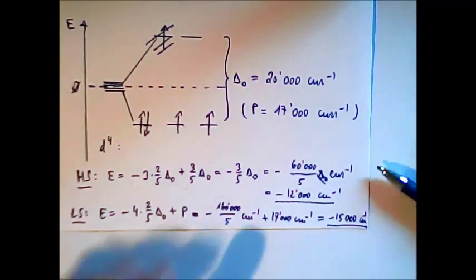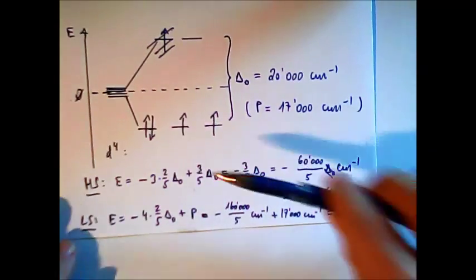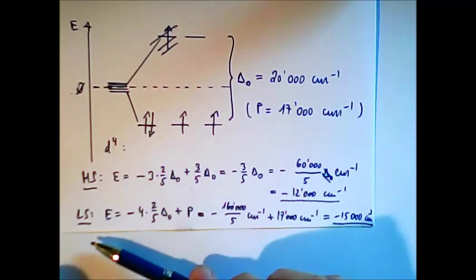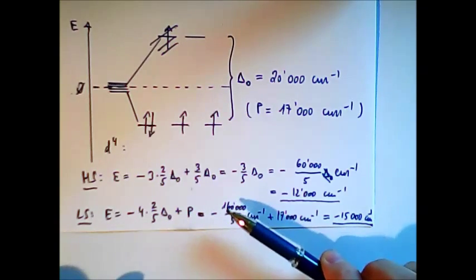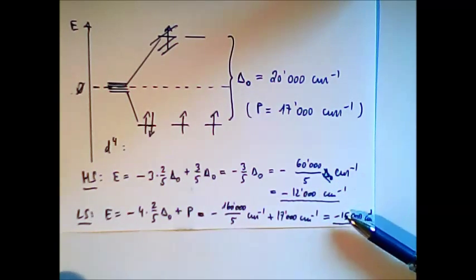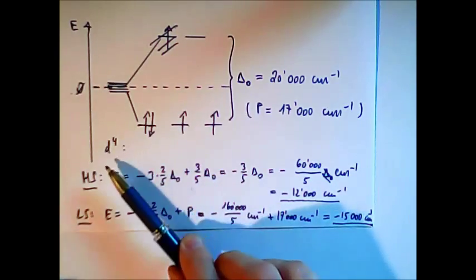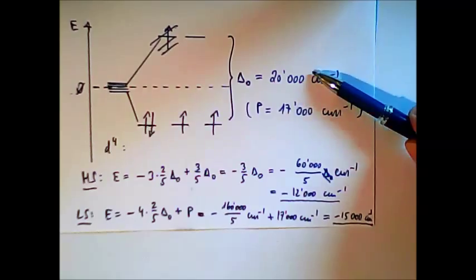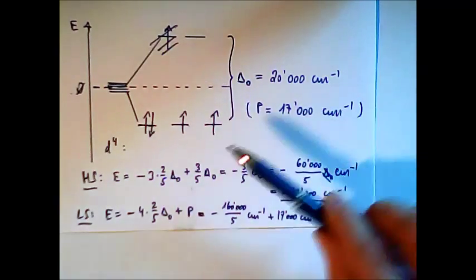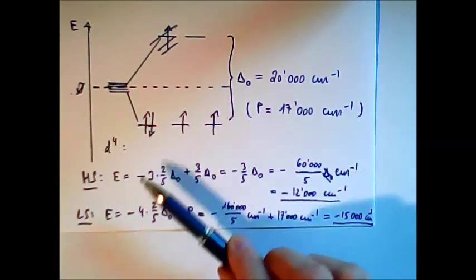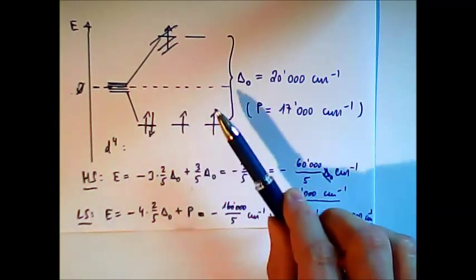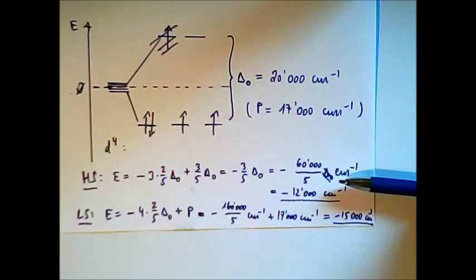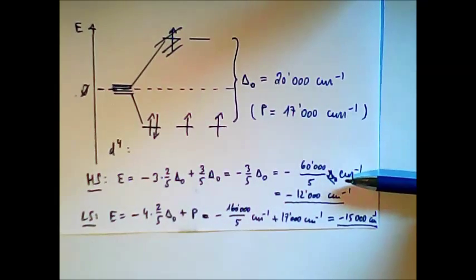So the high spin complex has energy minus 12,000 cm⁻¹ and the low spin has minus 15,000 cm⁻¹. Since electrons want to be low in energy, the low spin complex is better — it has lower energy. So we can predict that for this d-4 complex with these measured values of delta-O and P, the low spin complex is energetically preferred over the high spin complex.